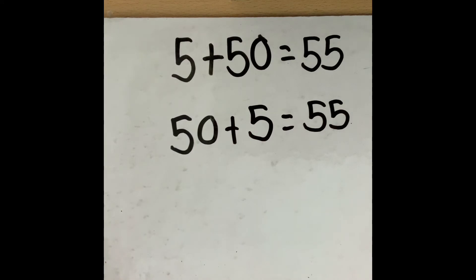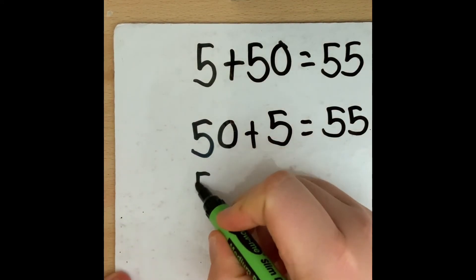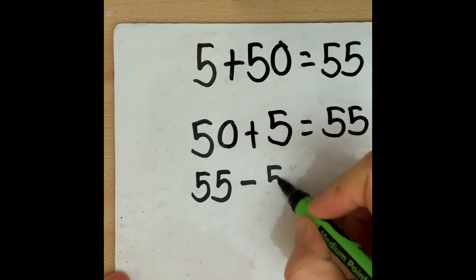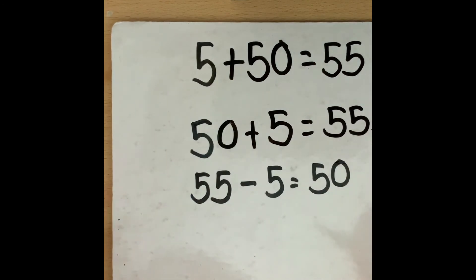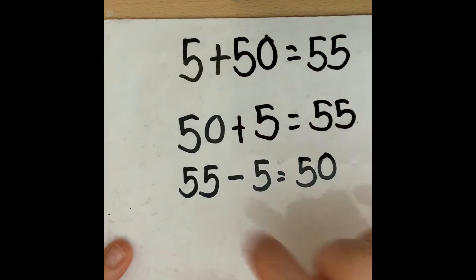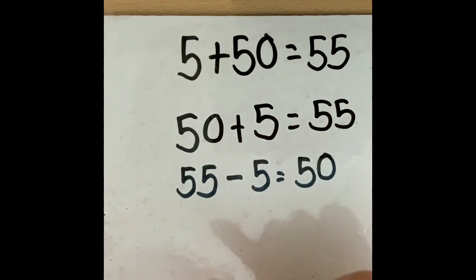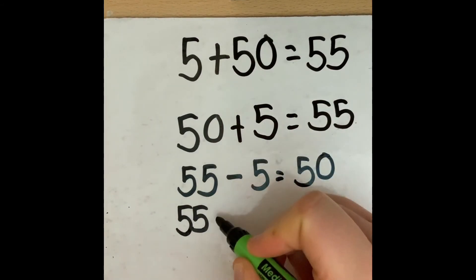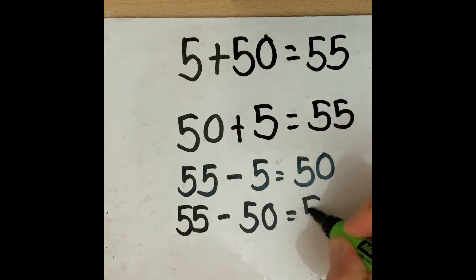And then with subtraction sums, say if I had 55 subtract 5 my answer will be 50. And I can move some of the numbers around but I cannot move the 55. Remember the 55 in subtraction, the bigger number always has to go at the start. So I can also write 55 subtract 50 and it will give me 5.